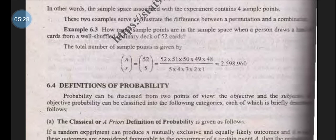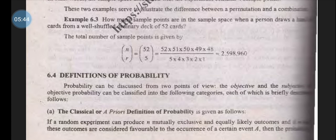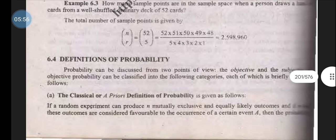Example: How many sample points are in the sample space when a person draws 5 cards from a well-shuffled ordinary deck of 52 cards? nCr equals 52C5 equals 52 times 51 times 50 times 49 times 48 over (5 times 4 times 3 times 2 times 1). After cancellation and multiplication, the answer is 2,598,960.